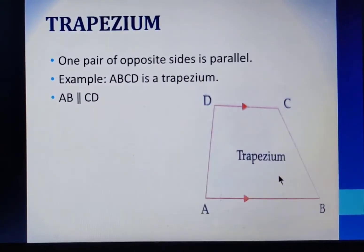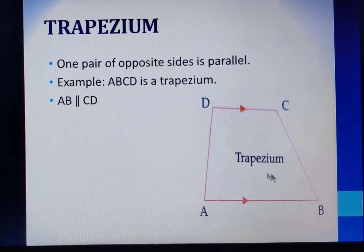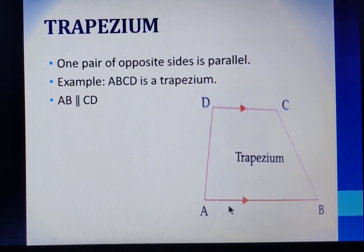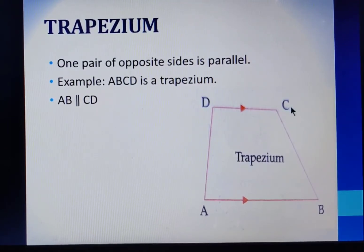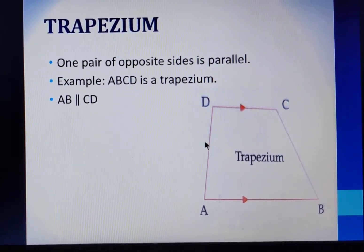Now, let us see about trapezium. Trapezium is also a kind of quadrilateral as it has four sides. In a trapezium, we will have only one pair of opposite sides parallel. You see, here we have a trapezium ABCD, and in this trapezium AB is parallel to CD, whereas BC is not parallel to AD. So in a trapezium we get only one pair of opposite sides as parallel.